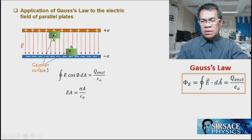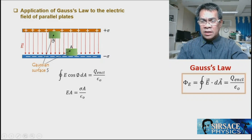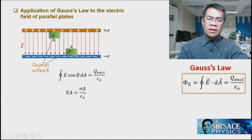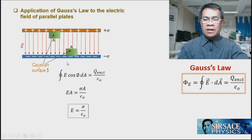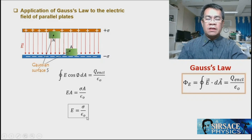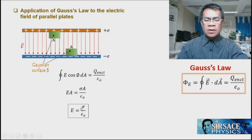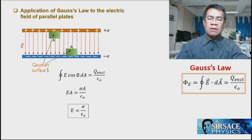There is no flux on the curved part of the cylinder because the electric field goes in the axial direction; flux only passes through the circular end. Cancelling area A, the electric field of parallel plates is E = σ / ε₀. At any distance between the parallel plates, the electric field is σ / ε₀, meaning the distance between the plates does not affect the magnitude of the electric field.